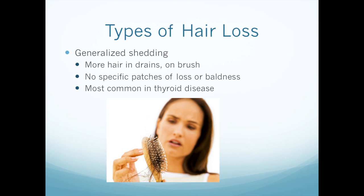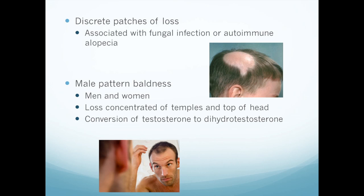In terms of head loss, there are three different kinds. The first is general shedding, and this is the type you see primarily in thyroid disease — you notice a lot of hair in your drain or in your brush. This can be pretty scary. The thing to remember is there are no specific patches of loss and it's not actual balding. You'll have thinning, but it does not go to actual balding. That's compared to discrete patches of loss, which is much more common with a fungal infection or other autoimmune disease, not thyroid disease.